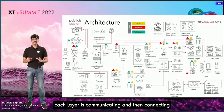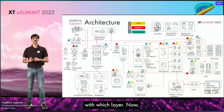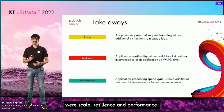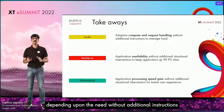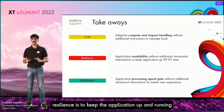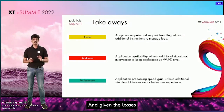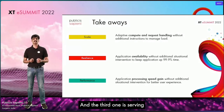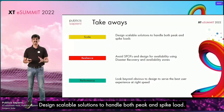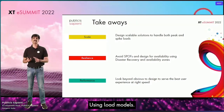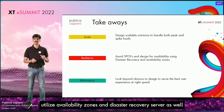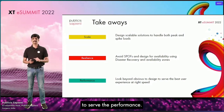Let's connect the dots — each layer communicating and connecting with the others. The key takeaways: scale means the application should be auto-intelligent to scale up and down depending on need without additional instructions. Resilience means keeping the application up and running to a three-digit percentage availability, given the losses that can happen when resilience is not maintained. Performance means serving the best user experience at the right speed. To achieve these: design scalable solutions to handle peak and spike loads using load models; avoid single points of failure and utilize availability zones and disaster recovery servers; and look beyond the given design to serve performance. Thank you.